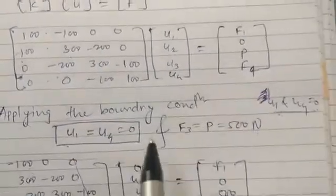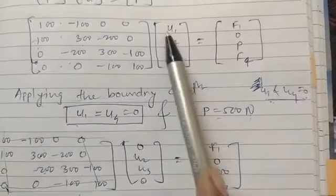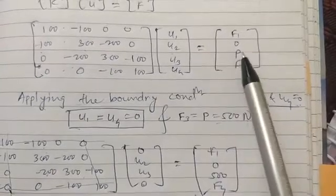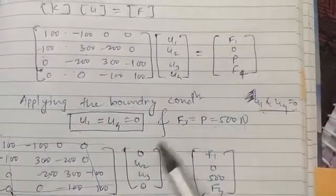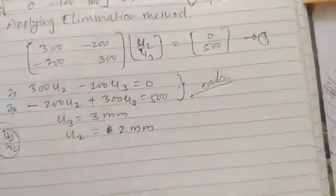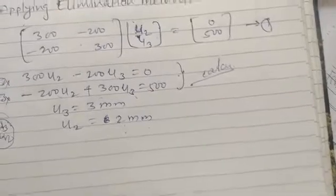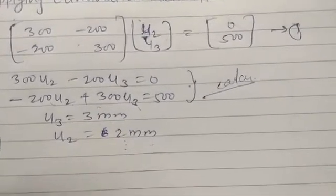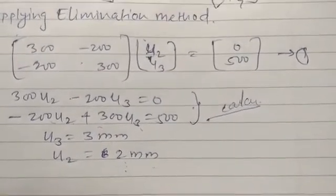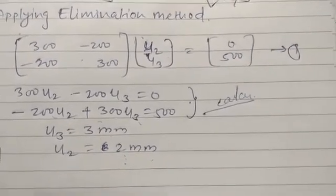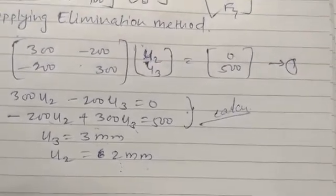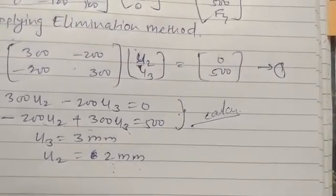Now that u1 = 0, u2 = 3 mm, u3 = 2 mm, and u4 = 0 are all known, the reaction forces can be calculated easily from the global stiffness equation. This is how we analyze springs in series using finite element analysis. If you have any queries, feel free to ask. The remaining parts of the numerical are left for your self-study. Thank you.